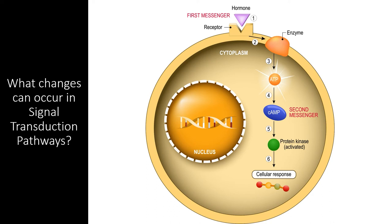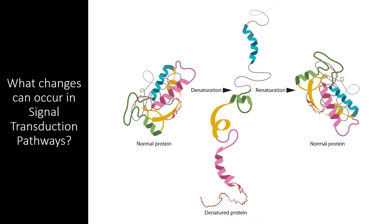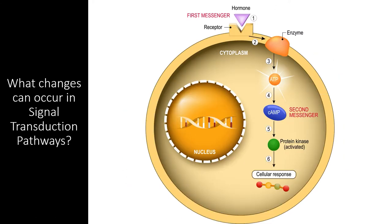While signal transduction pathways can be immensely complex, there are only a few things that can actually change and disrupt the pathways. First off, there are always environmental conditions that can denature proteins and disrupt signal transduction pathways. If the temperature or pH of the cell gets outside of a livable range, the proteins and enzymes of a cell's signal transduction pathways will denature and will no longer function.